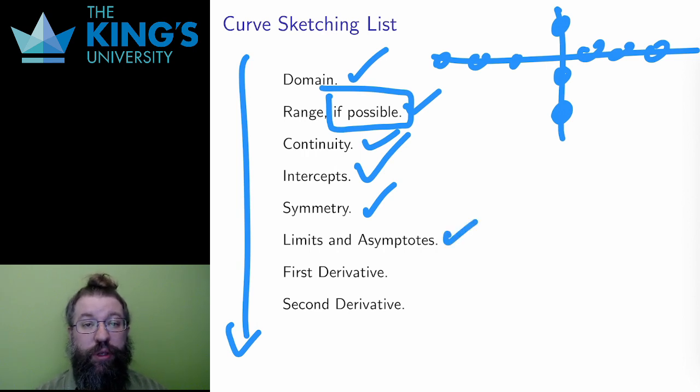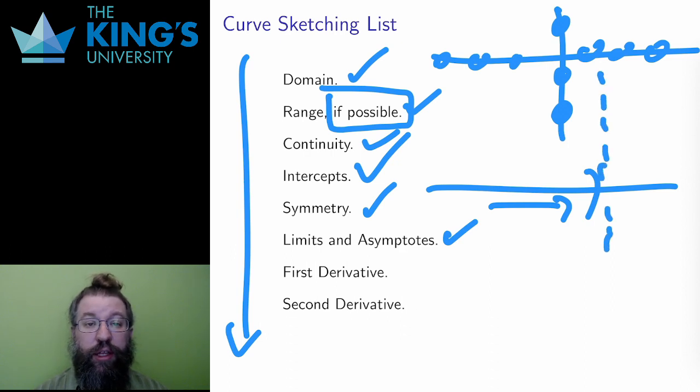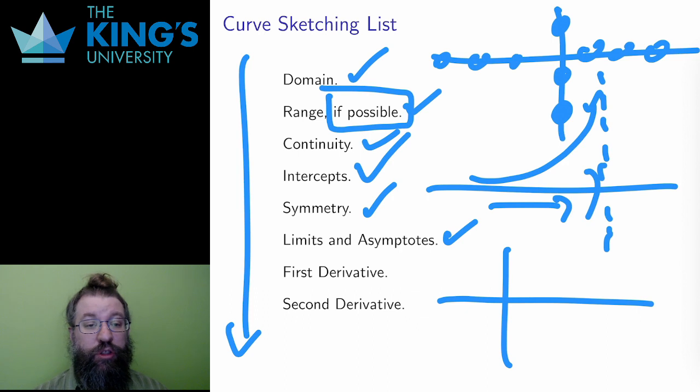Next, I look at limits and asymptotes. I'll do this in two pieces. First, if the domain stops at a finite value, I will take the limit approaching the edge of the domain. If that limit exists, then I know how to end the function. And if that limit is plus or minus infinity, then I know there will be a vertical asymptote, and I can draw the function approaching this vertical line. Next, I take the limit to plus or minus infinity, as long as the domain allows. If these limits are finite, then there is a horizontal asymptote, and again, I can draw the function approaching that line.